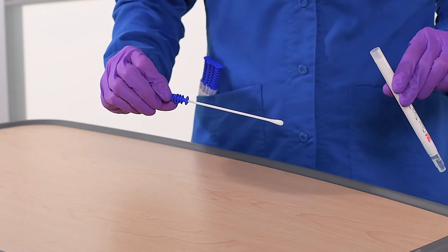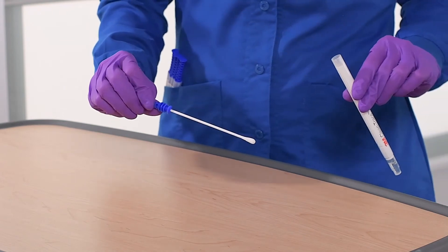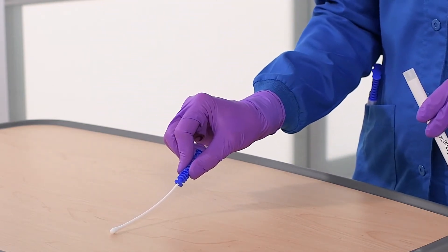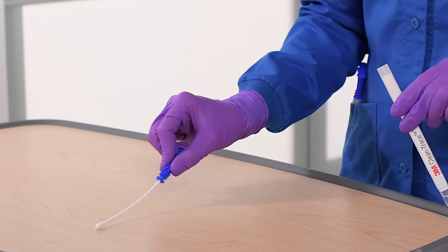Hold the test between thumb and forefinger so you can easily rotate the swab. Touch the swab to the surface you are testing and apply enough pressure to cause the wand to flex.